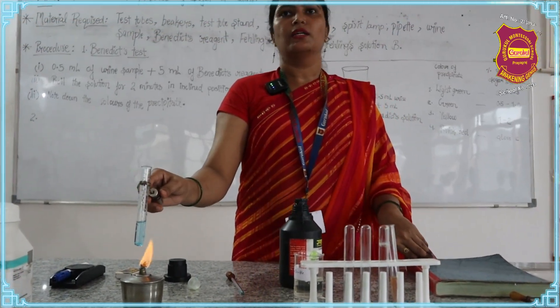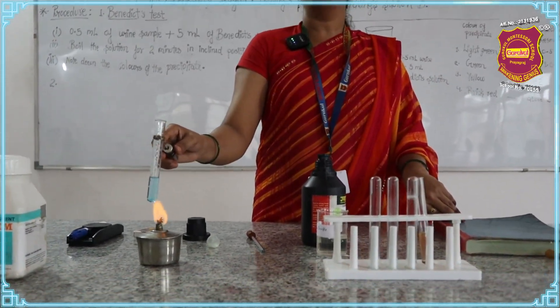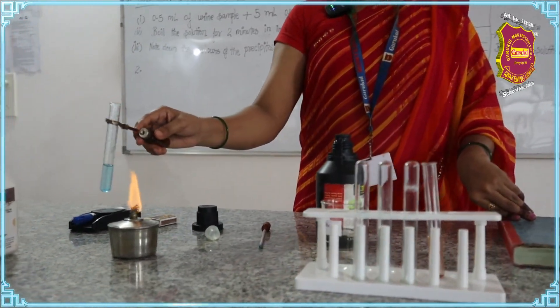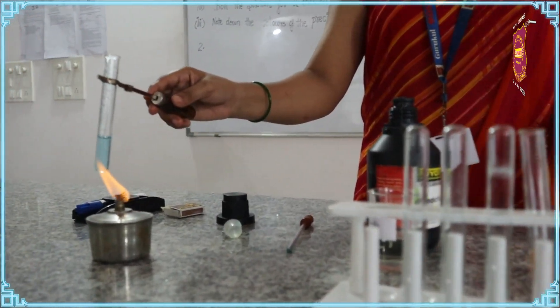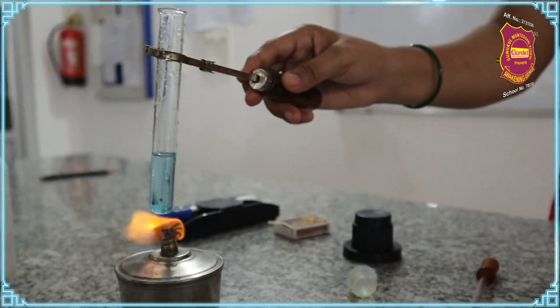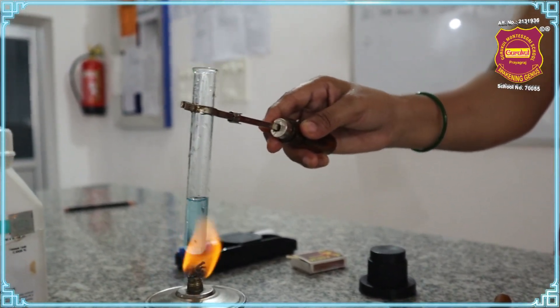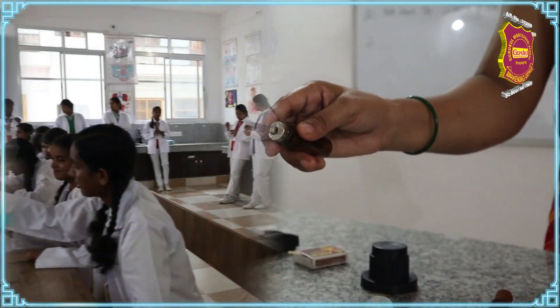You will be observing three types of color: green, orange, and brick red. This color indicates the intensity of the presence of sugar in the urine sample.